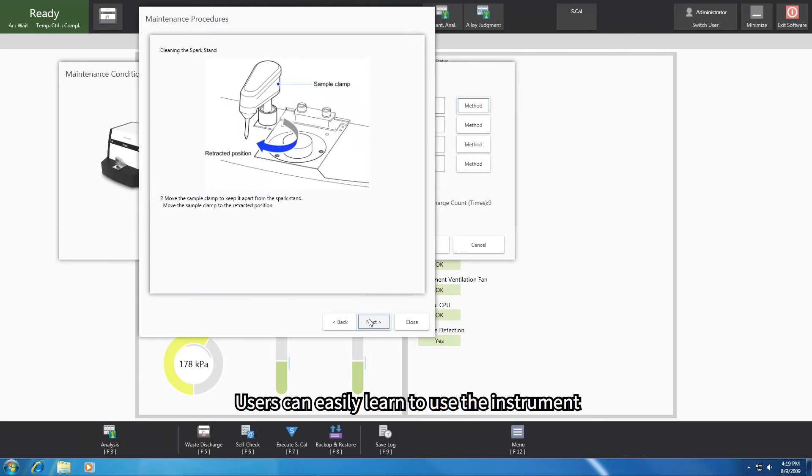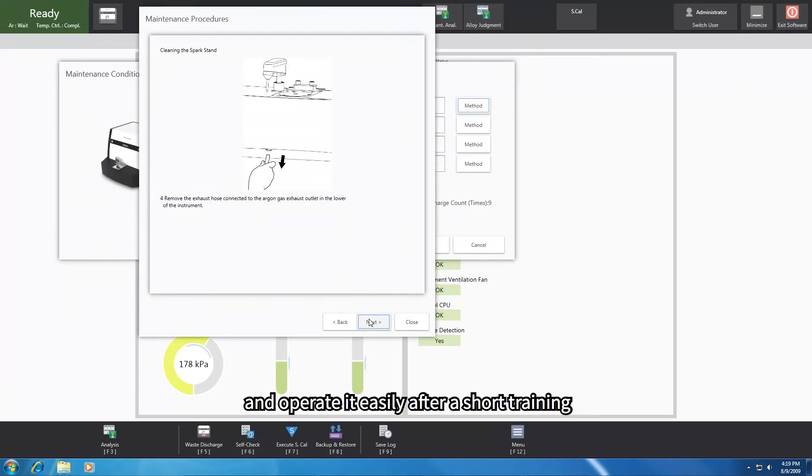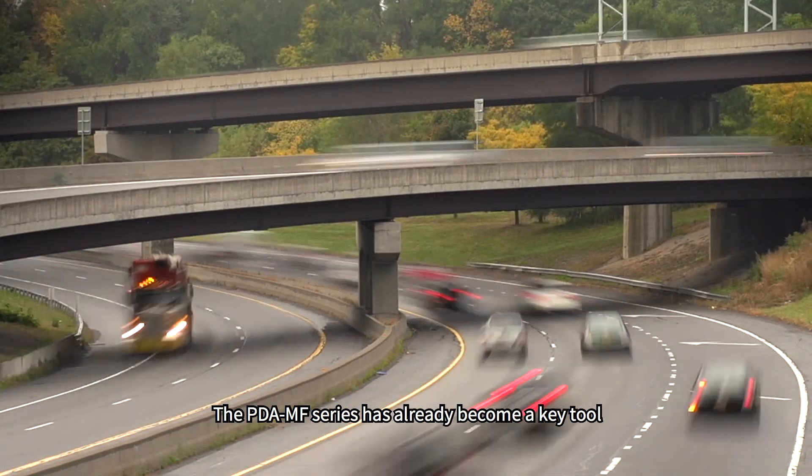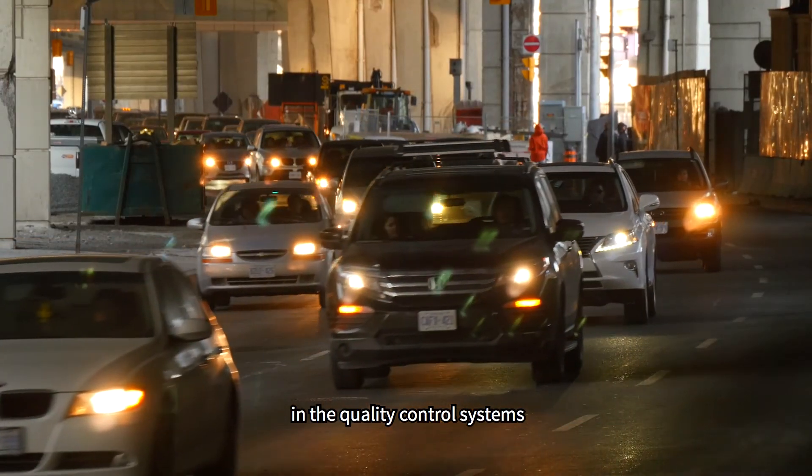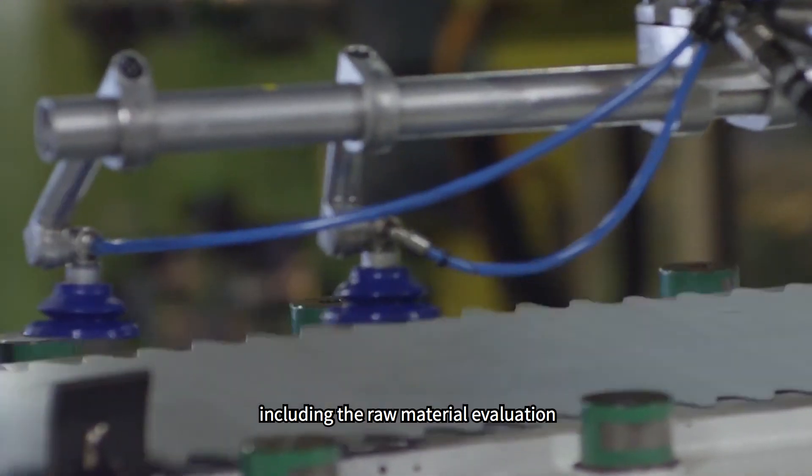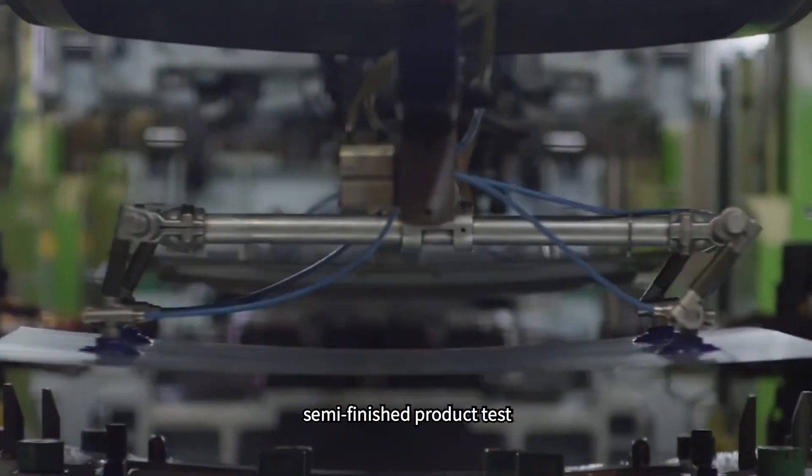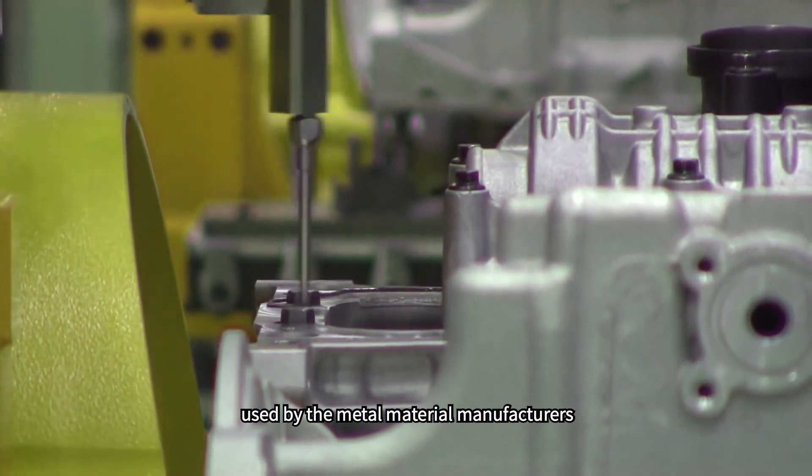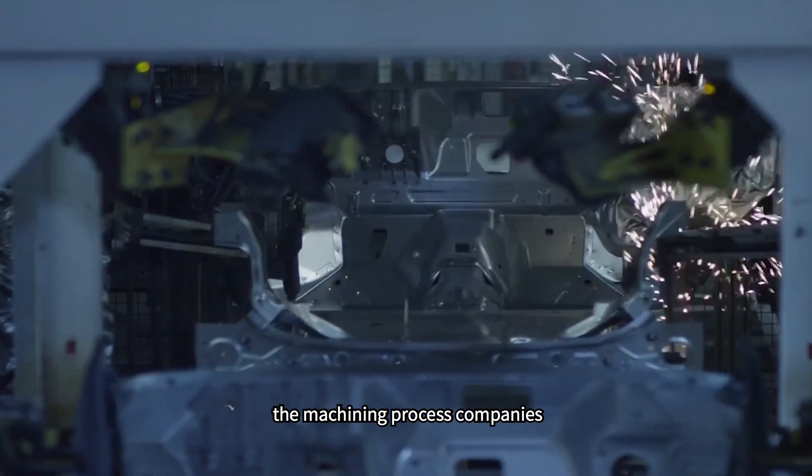Users can easily learn to use the instrument and operate it easily after a short training. The PDAMF series has already become a key tool in the quality control systems, including the raw material evaluation, semi-finished product test and finished product re-inspection used by the metal material manufacturers, the machining process companies, as well as the third-party inspection organizations.